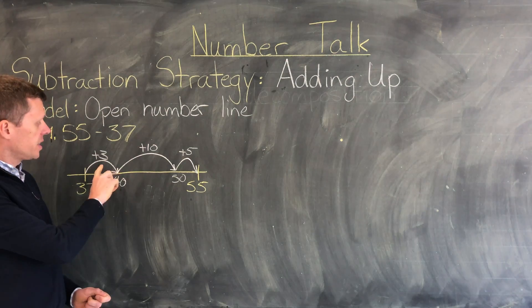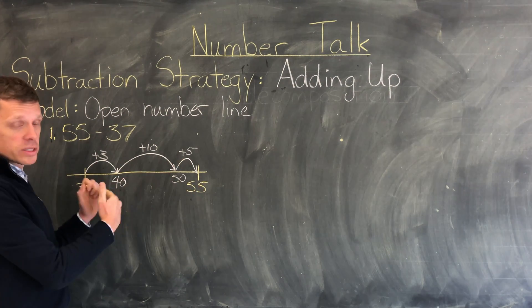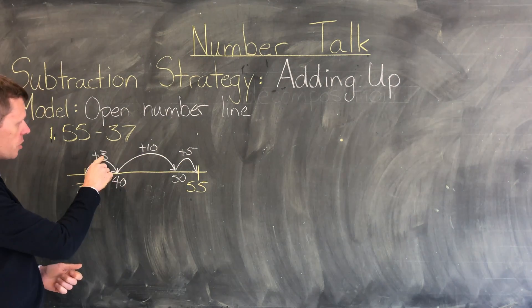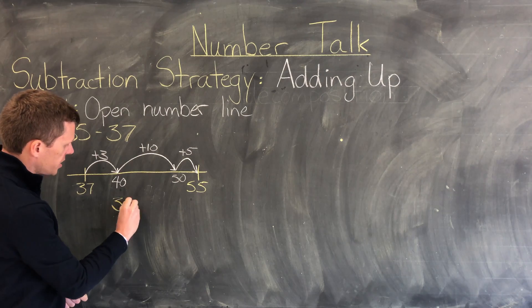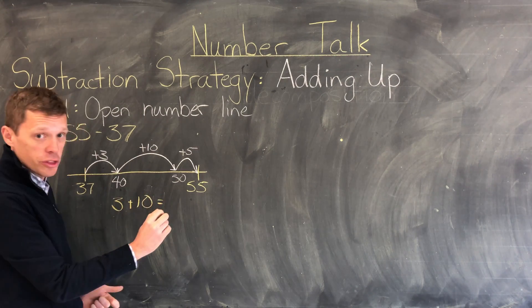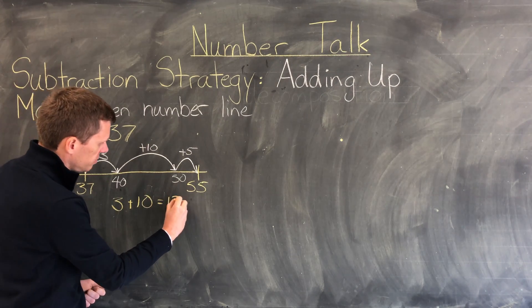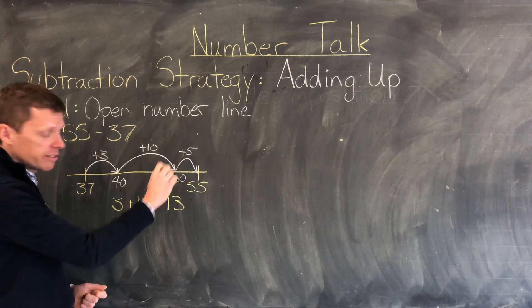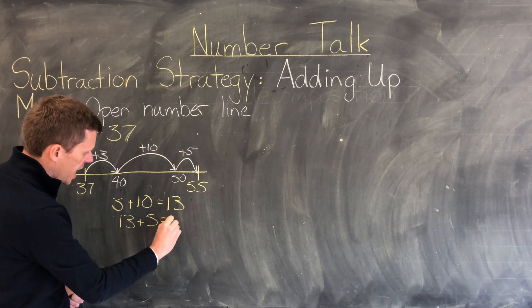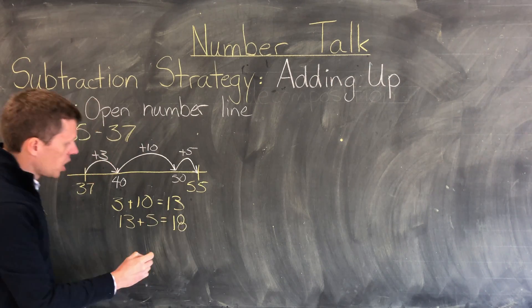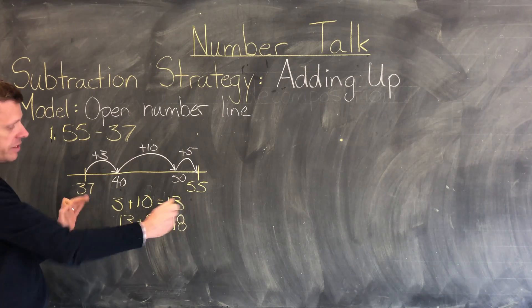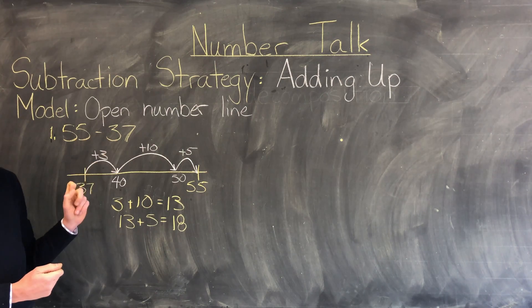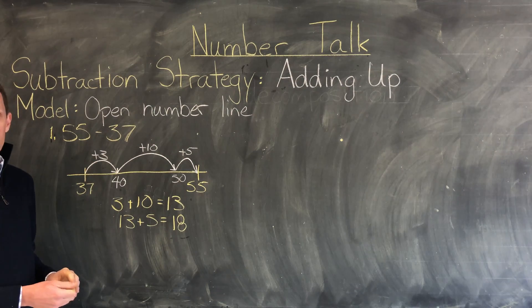My final step is to add my three jumps together so I get a total distance that 37 is from 55. So 3 plus 10 equals 13. Then we're going to add 13 plus 5 and that equals 18. So from 37 to 55 we're a total distance of 18 away or 55 subtract 37 is equal to 18.